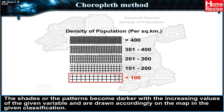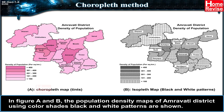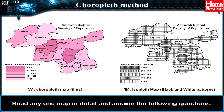The shades or patterns become darker with increasing values of the given variable and are drawn accordingly on the map. In the given figures A and B, the population density maps of Amravati district using color shades and black-and-white patterns are shown. Read any one map in detail and answer the following questions.